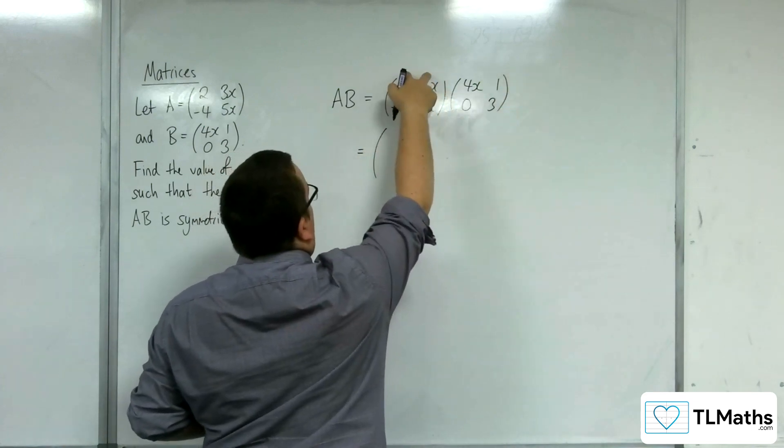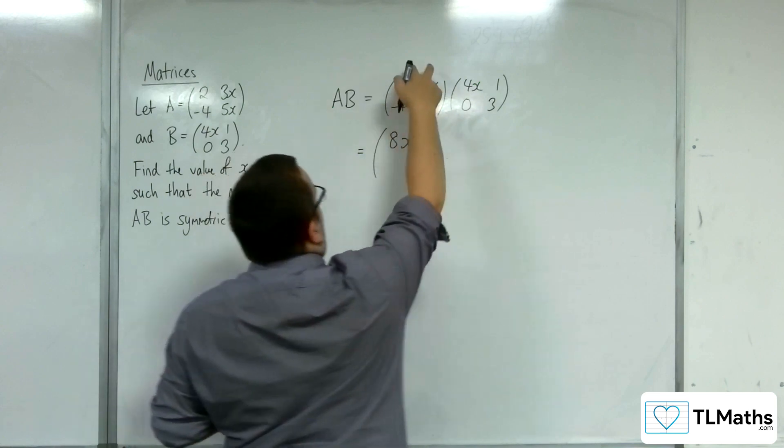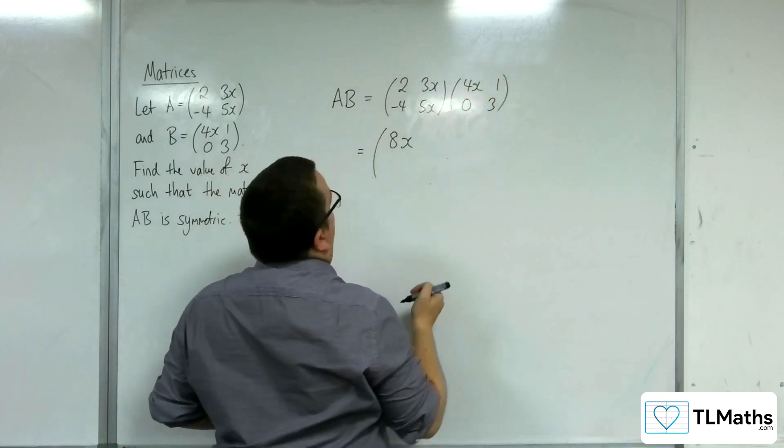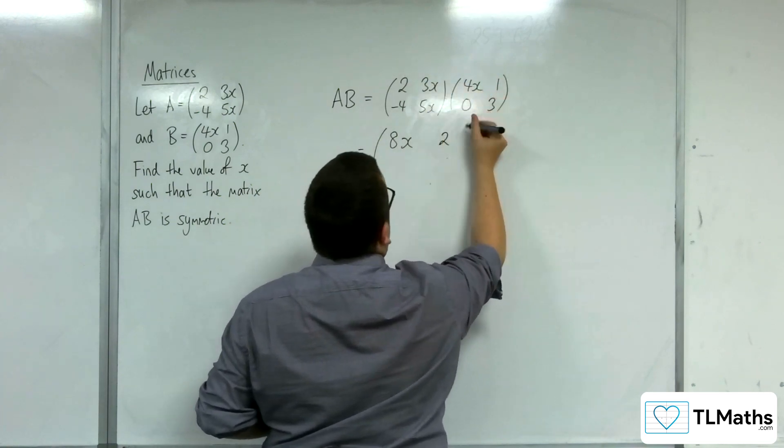So we have the 2, 3x multiplying with the 4x, 0, so that just leaves me with 8x. We've got the 2, 3x times the 1, 3, so that's 2 times 1 is 2, and then 3x times 3, so 9x.